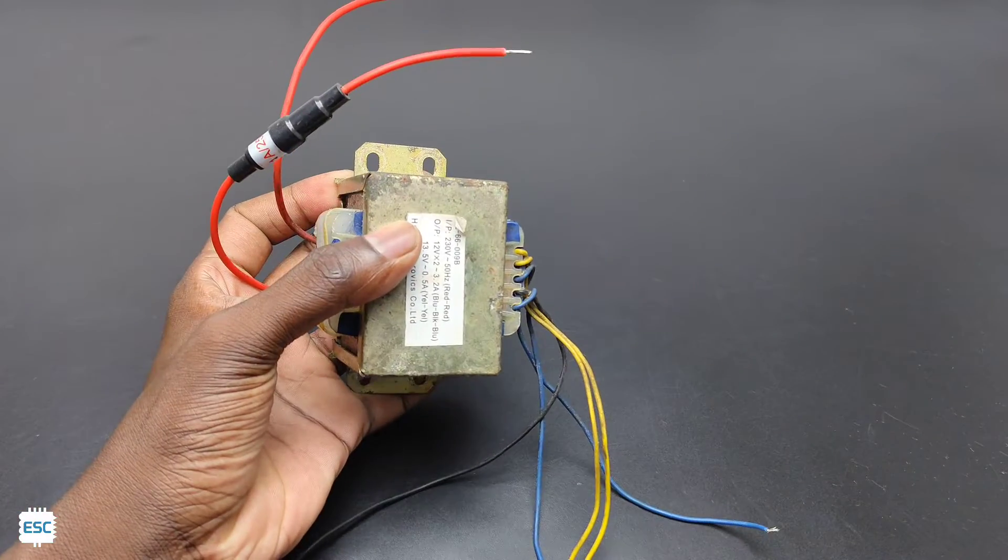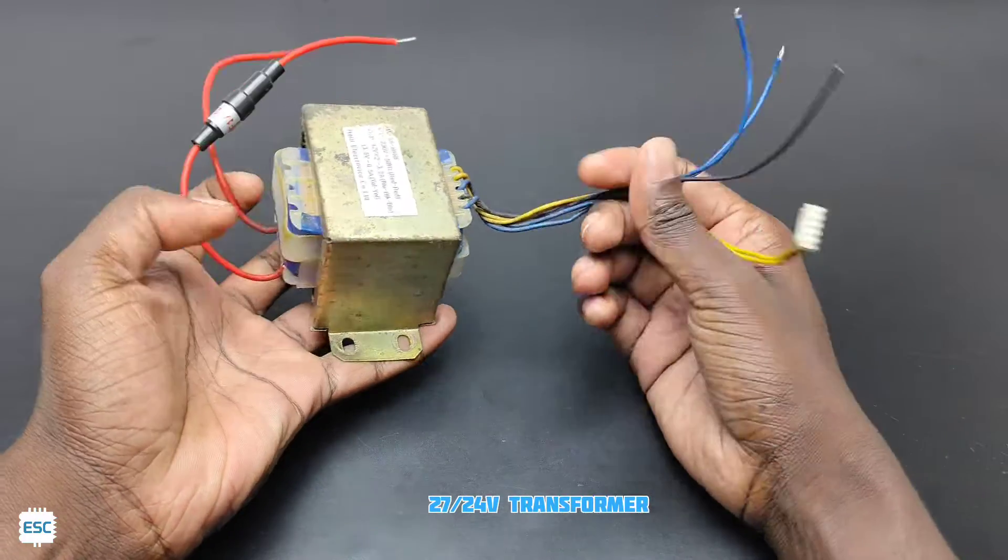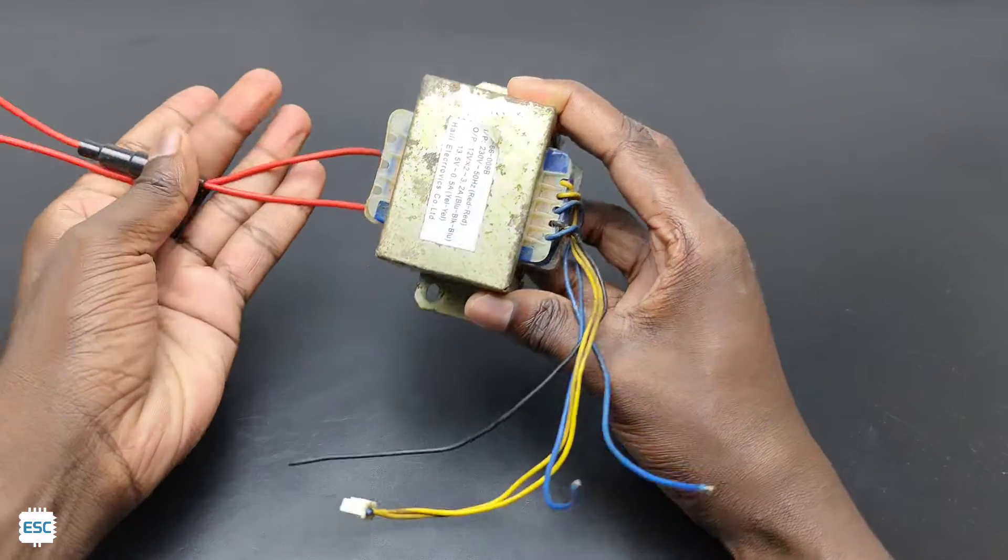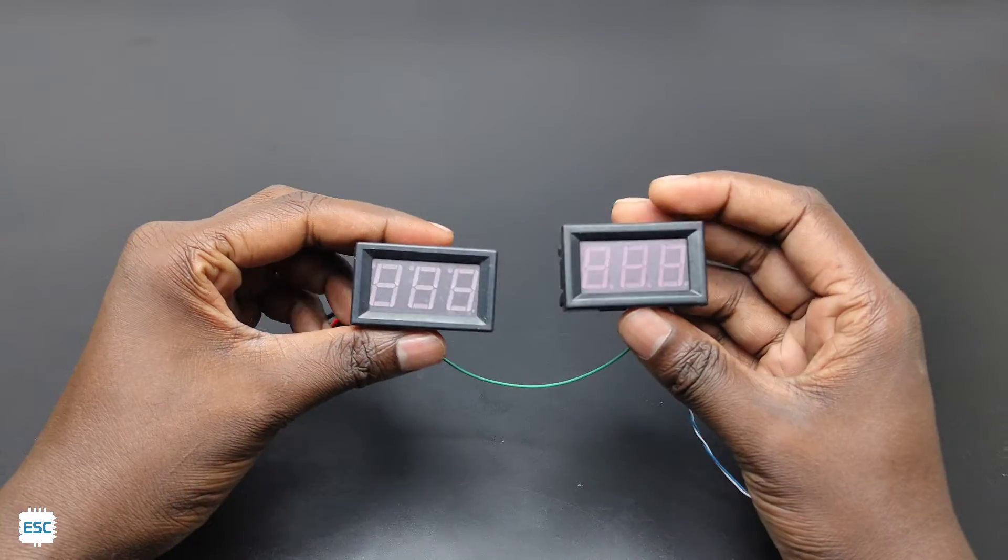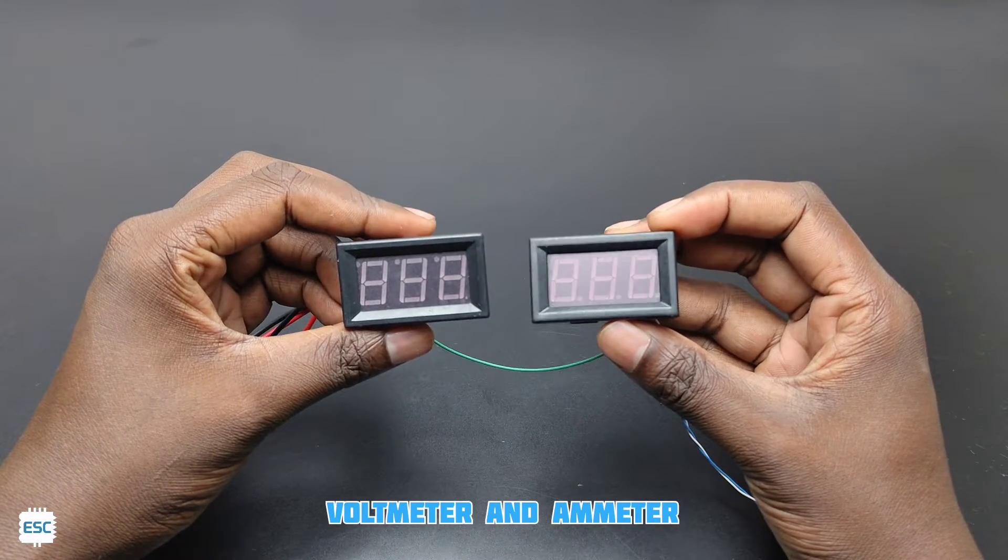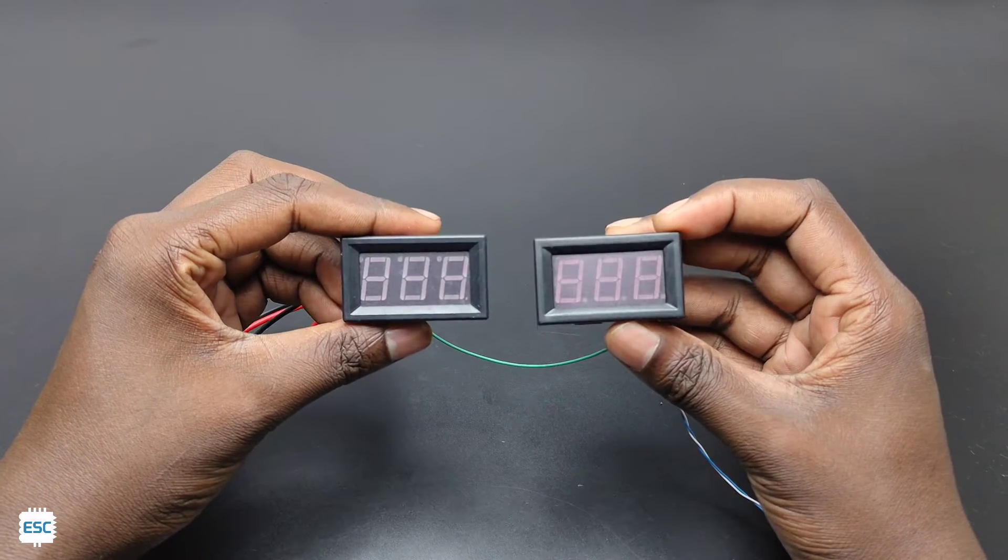Next we need a 27 or 24 volt transformer. I salvaged this one from an old home theater. Then we need a voltmeter and an ammeter. You can use any type, any style meter. All components purchase links are available in the video description.